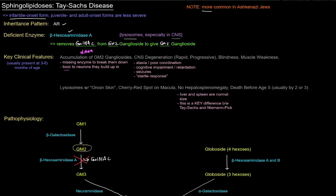The accumulation of those GM2 gangliosides, as well as degeneration of the central nervous system that is rapid and progressive, is a huge deal in Tay-Sachs disease.